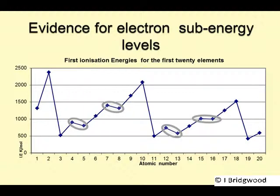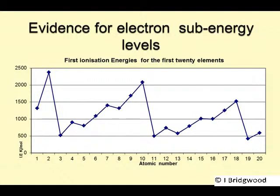These little drops cannot be explained just in terms of energy levels. We have to consider the idea of sub-energy levels, specifically for period 2 and period 3, the S and P sub-energy levels. The S subshell can only hold 2 electrons, and the P subshell can hold 6 electrons. The evidence for this comes from those drops in ionization energies.